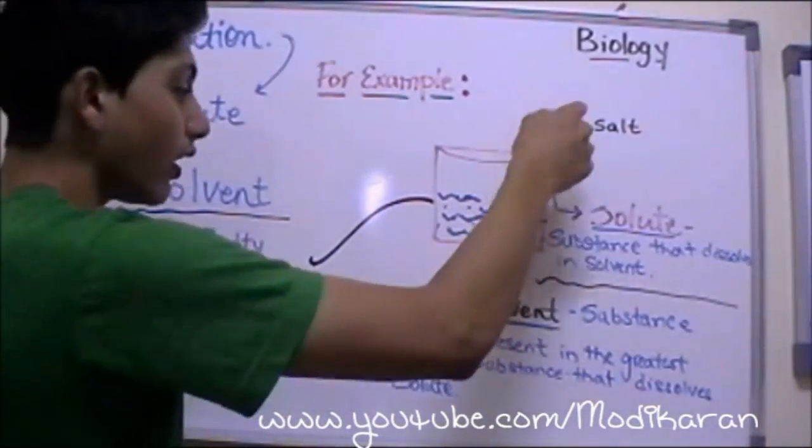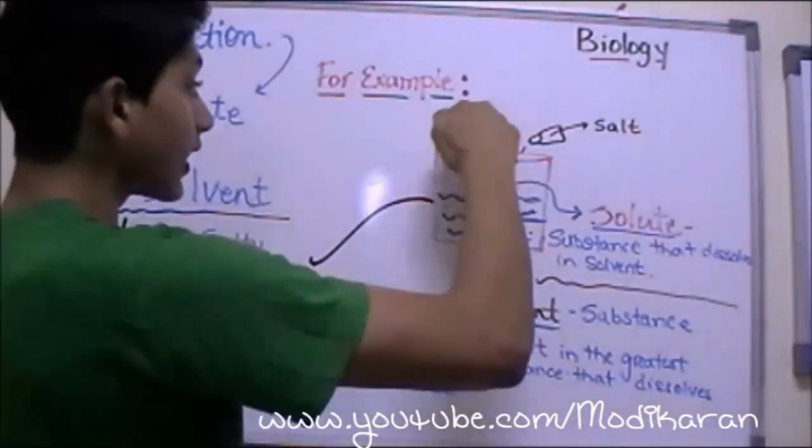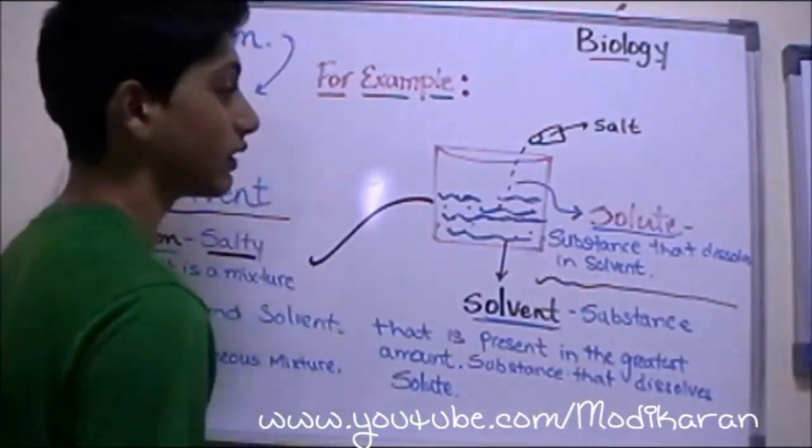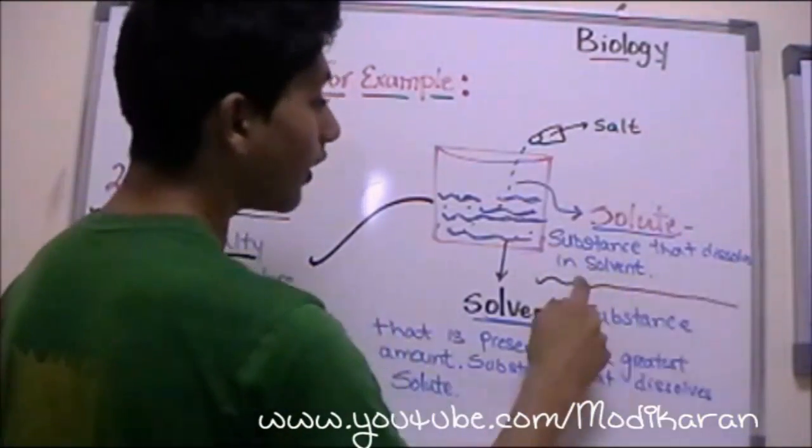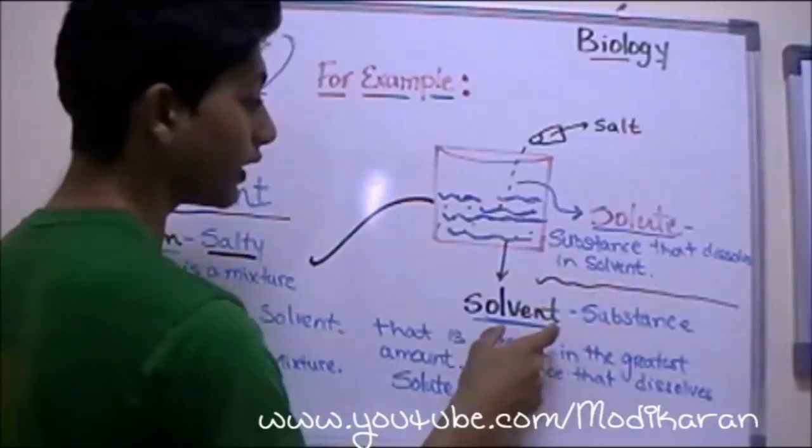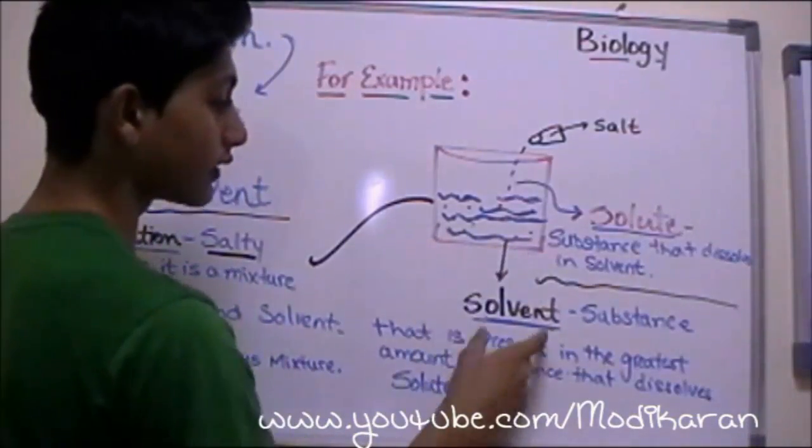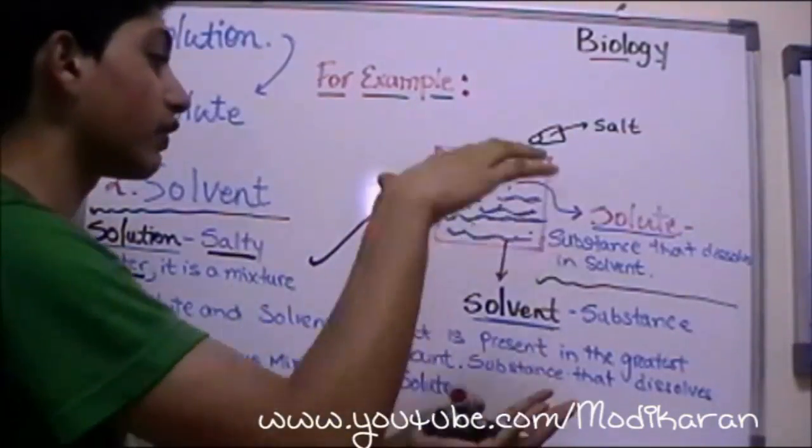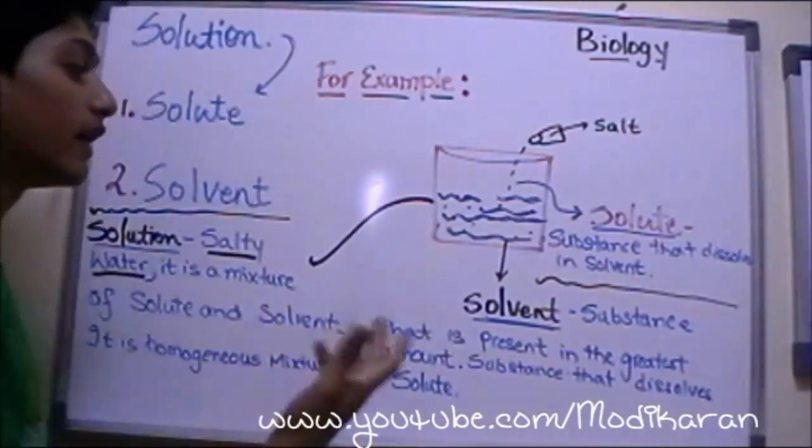Now if you pour salt and keep pouring salt until it comes over here, it's still going to be a solute. Why? Let's go ahead and look at the definition. Substance that dissolves in solvent. Well what is solvent? It's basically the substance which is present in the greatest amount as you guys can see in the definition.